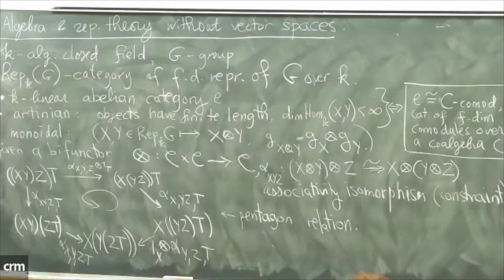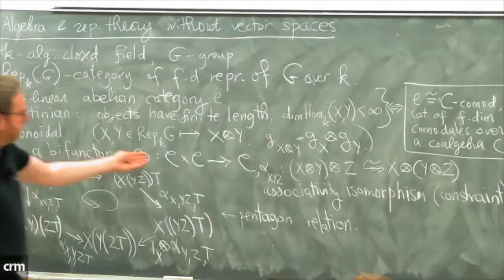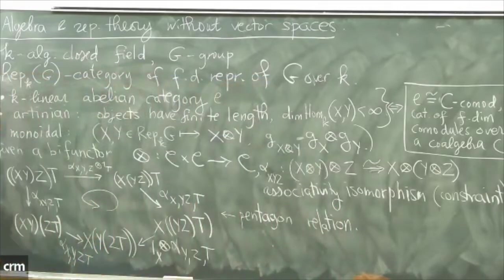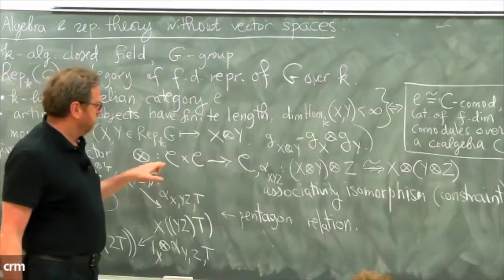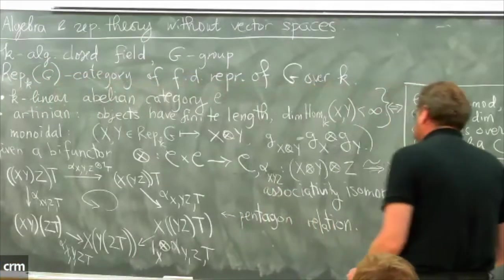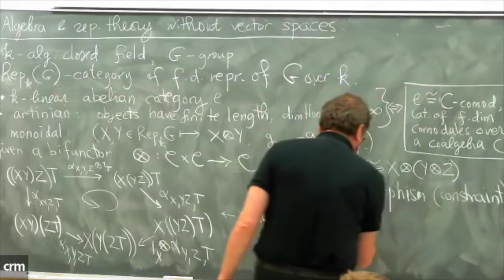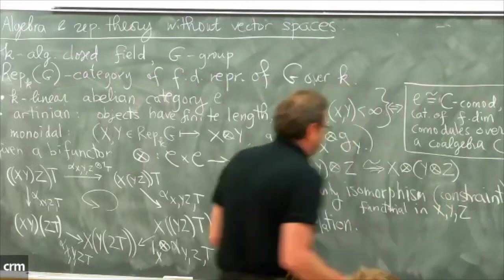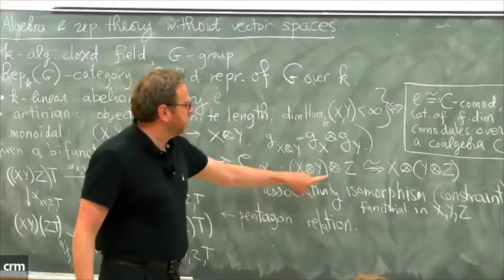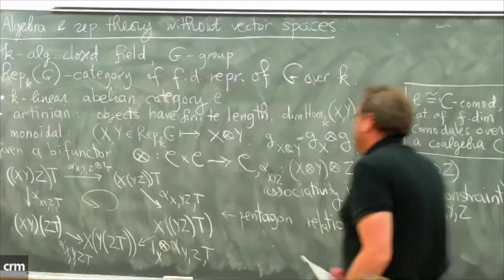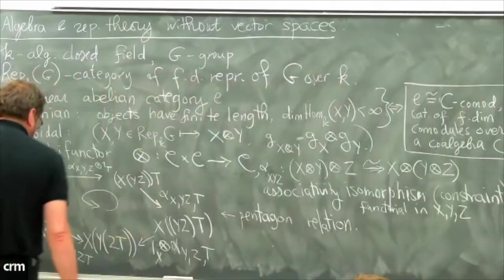So this is what replaces the definition of a semigroup. A semigroup has an associative multiplication law; here there is a multiplication law which is a functor, an associativity isomorphism which is functorial in x, y, and z — meaning it commutes with morphisms in each factor — and this isomorphism must satisfy the pentagon relation.